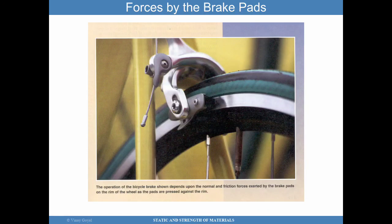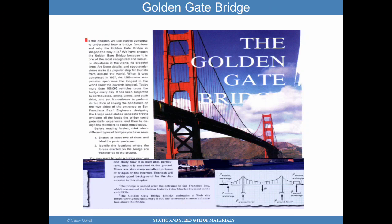Forces from brake pads act by applying normal and frictional forces. From the brake pads, these forces are translated to the rim and pressed against it to resist the motion of the wheel. The Golden Gate Bridge is another example where statics concepts can be used to understand how a bridge functions and why it is shaped the way it is.